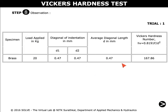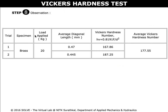These are the observations for the current trial. Similarly, we do one more trial. These are the observations for the two trials carried out in the simulation. The Vickers hardness number is found for both trials, and the average Vickers hardness number is also calculated.